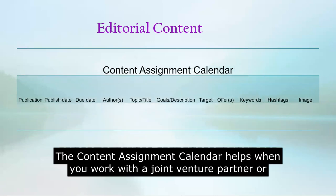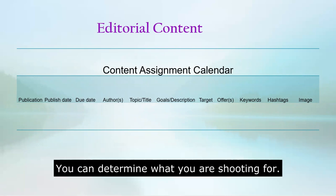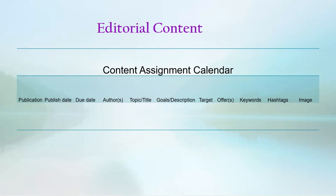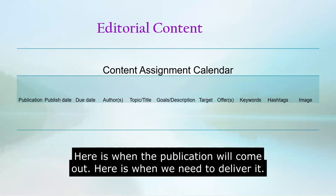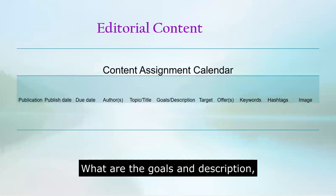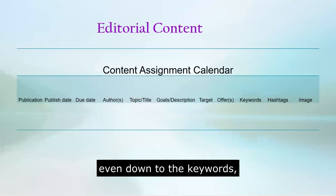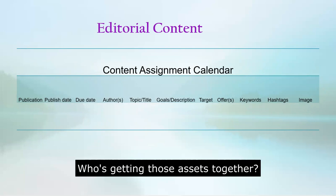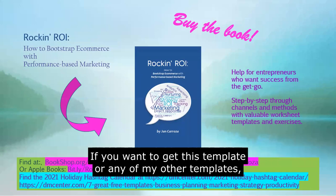The content assignment calendar is when you work with a joint venture partner or another team member, and you can determine what are we shooting for. We want to do a publication article together — here's when the publication will come out, here's when we need to deliver it by, who are the authors working on it, what are the goals and description, even down to the keywords, the hashtags, and the image — who's getting those together for the assets for our assignment calendar?